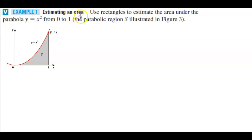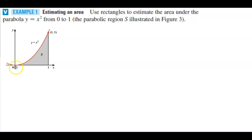Example 1: estimating an area. We're going to use rectangles to estimate the area under the parabola y equals x squared from 0 to 1. The parabolic region s is illustrated in this figure. We can see that the area s is between 0 and 1, where y equals x squared, and this point represents (1, 1). What we're going to do is approximate the area using rectangles.